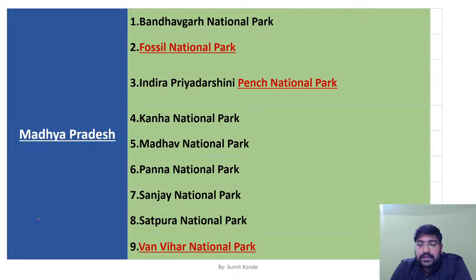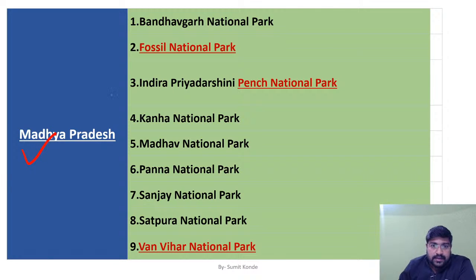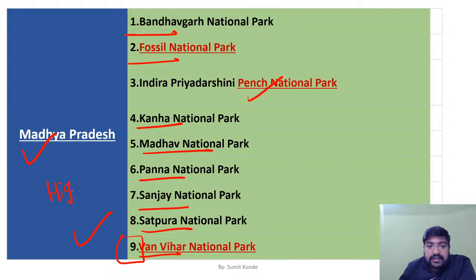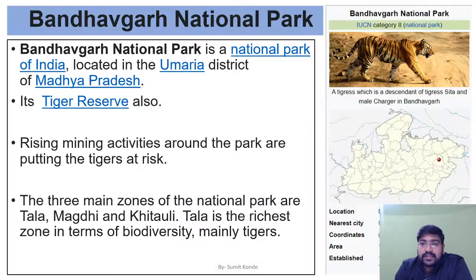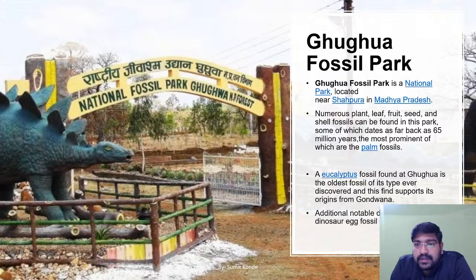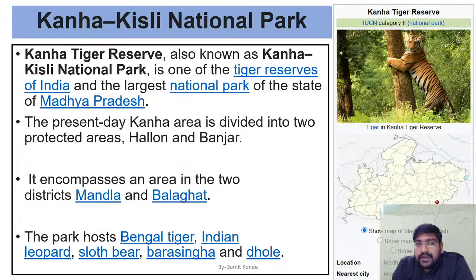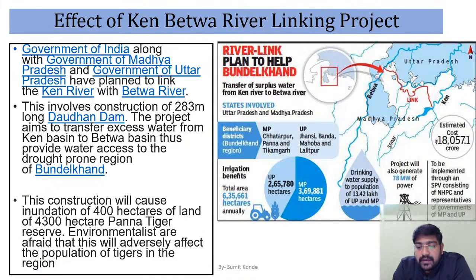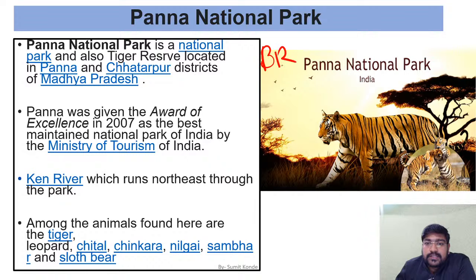So let's start. In the last lecture, we covered national parks of Madhya Pradesh. We completed Bandhavgarh, Fossil National Park, Indira Priya Darshini Pench, Kanha, Madho, Panna, Sanjay, Satpuda, and Van Vihar National Park — total nine national parks in MP, which has the highest number of national parks in India.